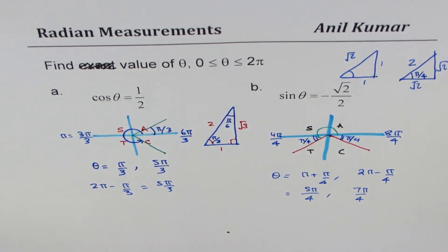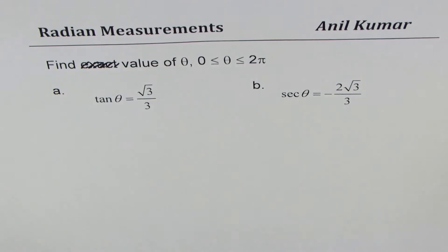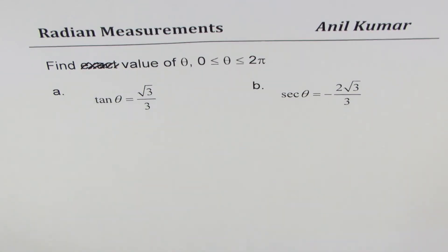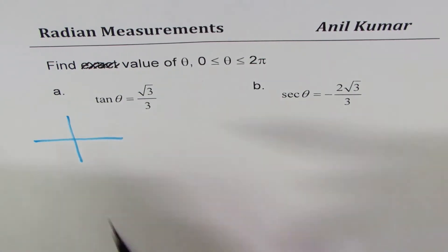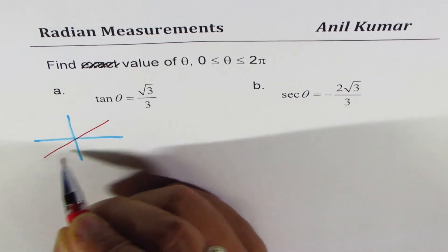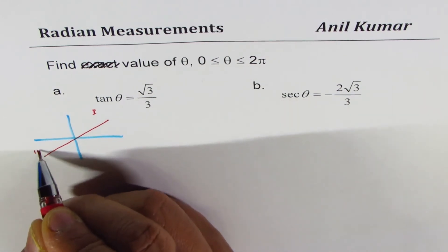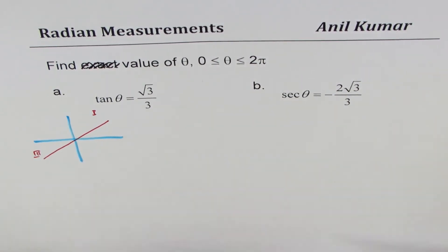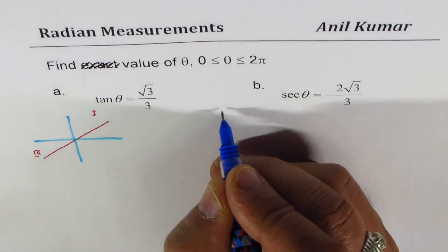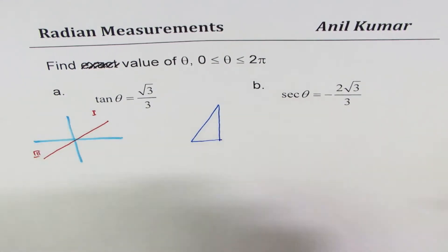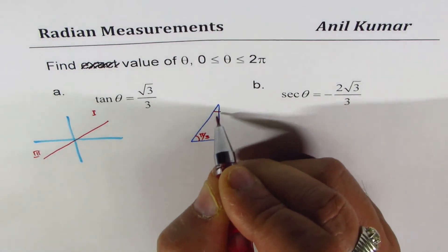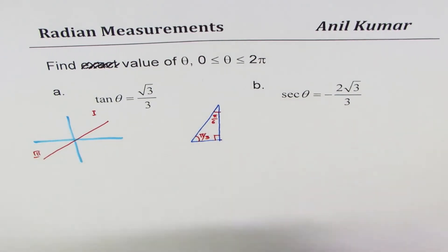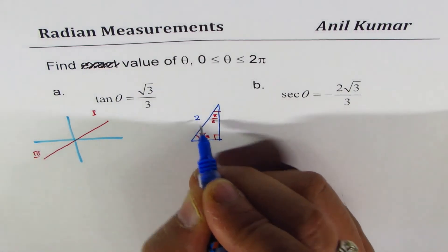Now for tan: tan is positive in quadrants 1 and 3, so we're looking for two solutions. The value √3 reminds us of the π/3, π/6 special triangle with sides 1, 2, √3.